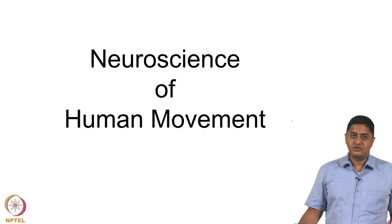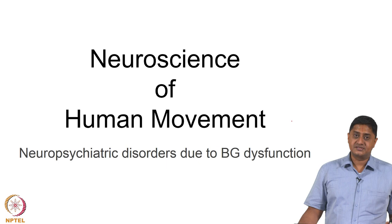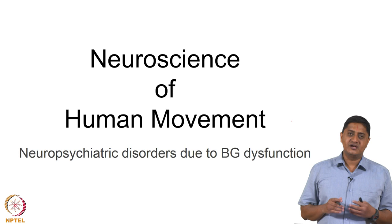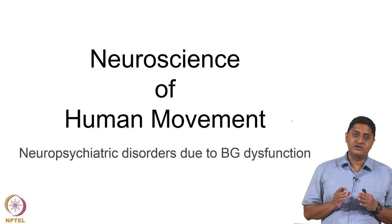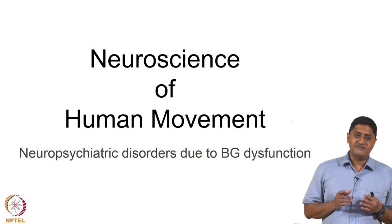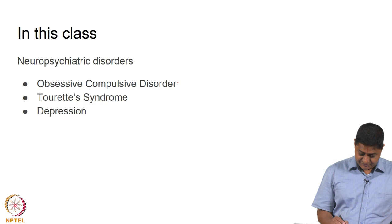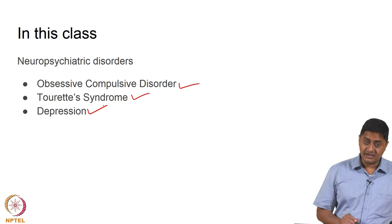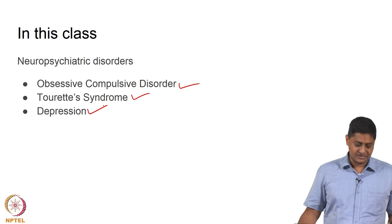Welcome to this class on Neuroscience of Human Movement. In this class we will discuss neuropsychiatric disorders arising out of Basal Ganglia dysfunction. This is slightly different from the regular classes where we usually limit our discussion to movements and dysfunction of movements. In this case we are going to discuss psychiatric disorders. We will take three examples of neuropsychiatric disorders: Obsessive Compulsive Disorder, Tourette's Syndrome, and Depression, and discuss the possible role of Basal Ganglia in these disorders.